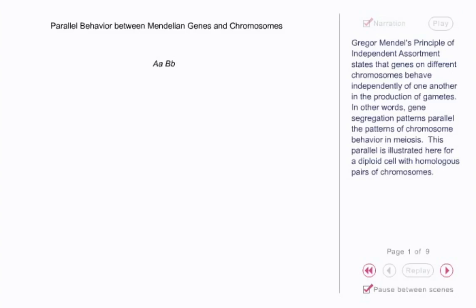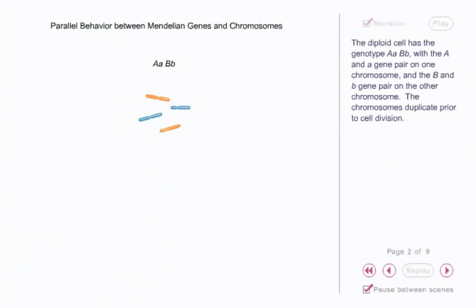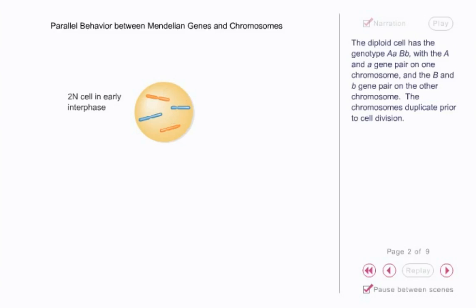This parallel is illustrated here for a diploid cell with homologous pairs of chromosomes. The diploid cell has the genotype big A, little a, big B, little b, with the big A and little a gene pair on one chromosome and the big B and little b gene pair on the other chromosome.